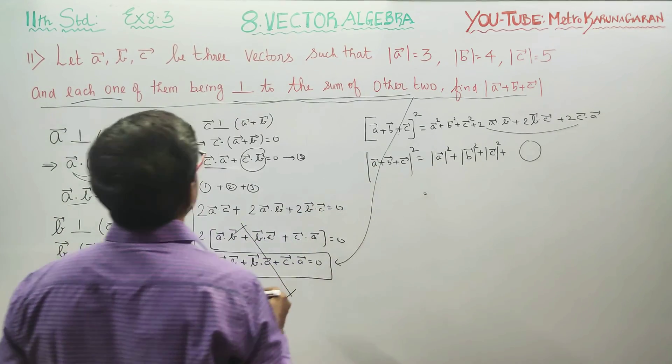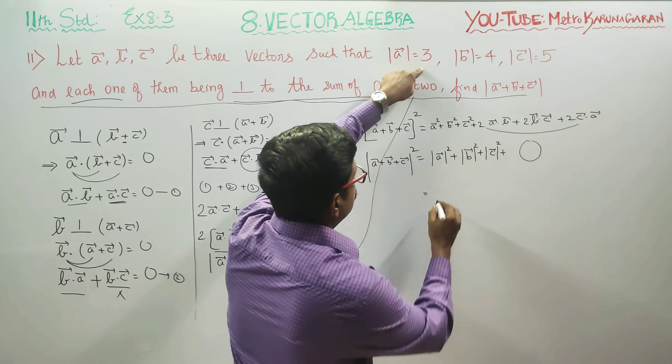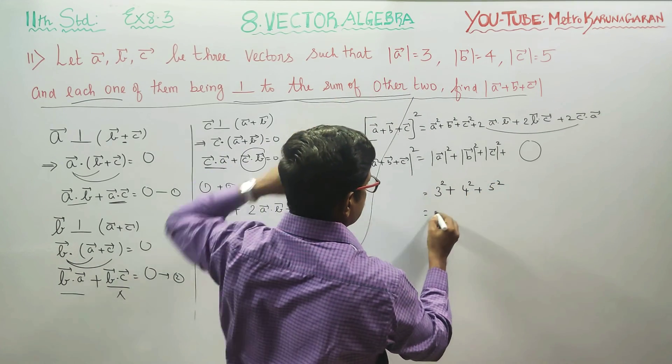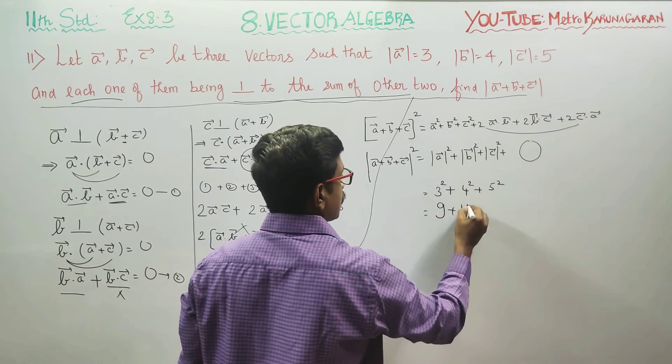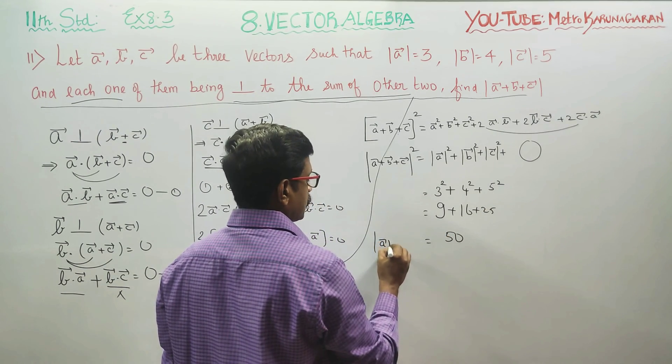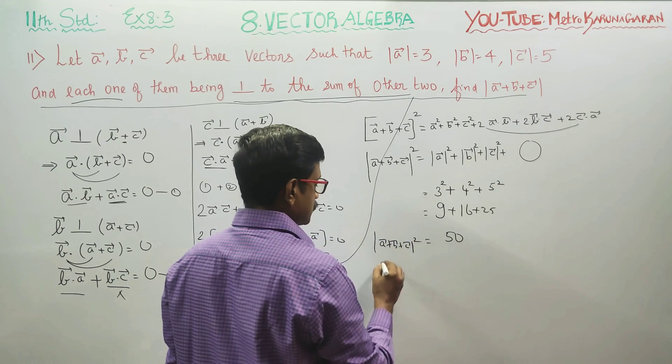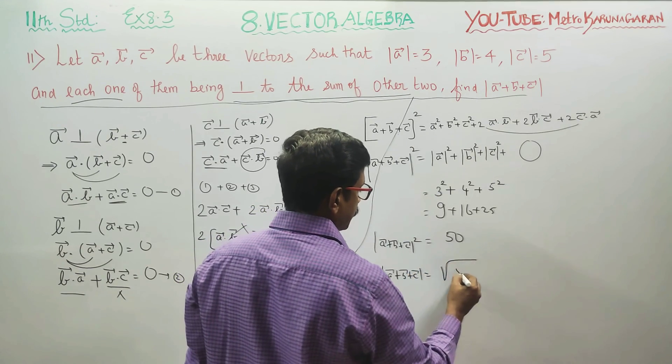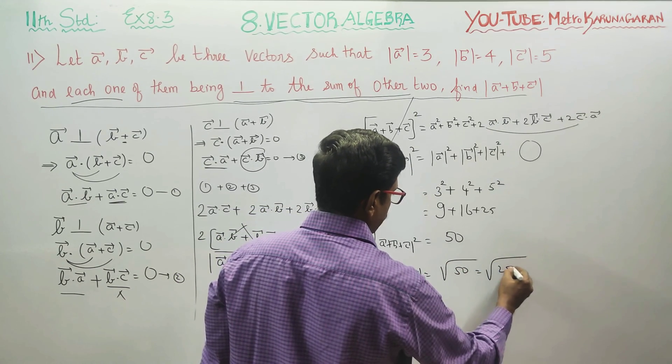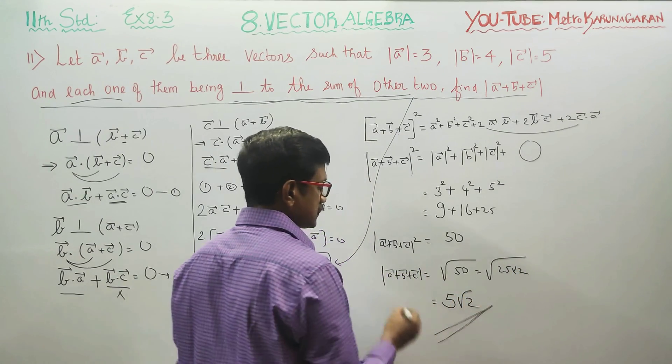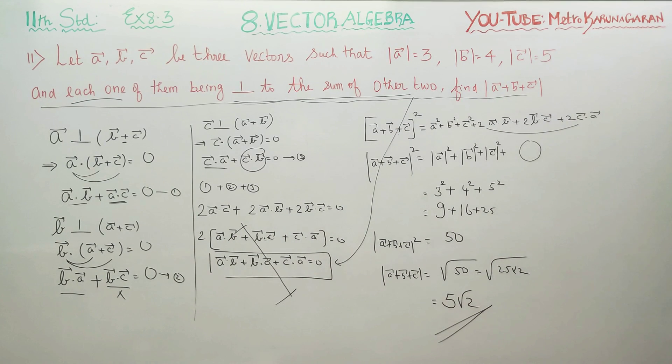Magnitude of A is 3. Magnitude of B is 4. Magnitude of C is 5. This becomes 9 plus 16 plus 25, that is 50. A vector plus B vector plus C vector whole square. Magnitude is positive answer. Magnitude means measurement, length. Square root of 50. 50 can be written as 25 into 2. Therefore your answer would be 5 root 2. Magnitude means measurement, length of the vector. The actual length of the vector is 5 root 2.